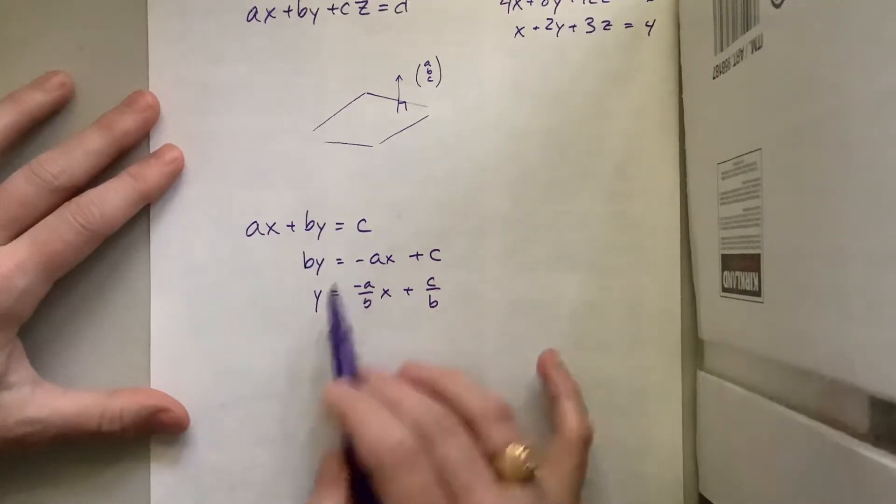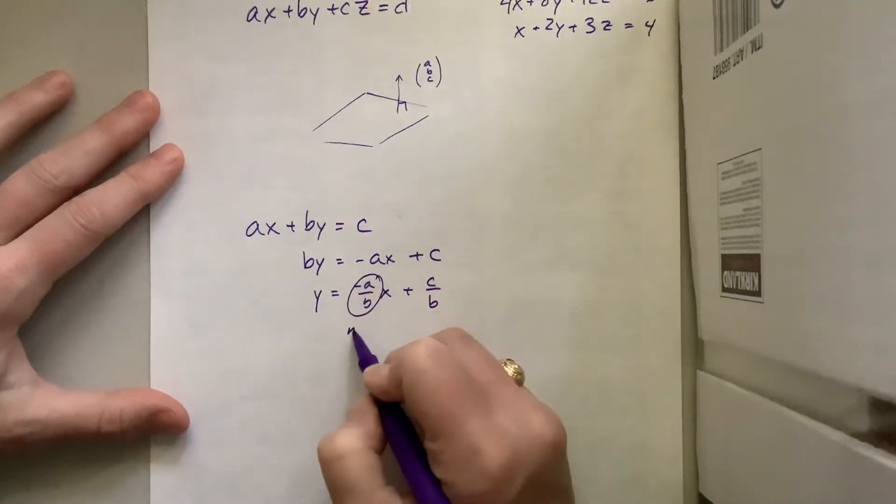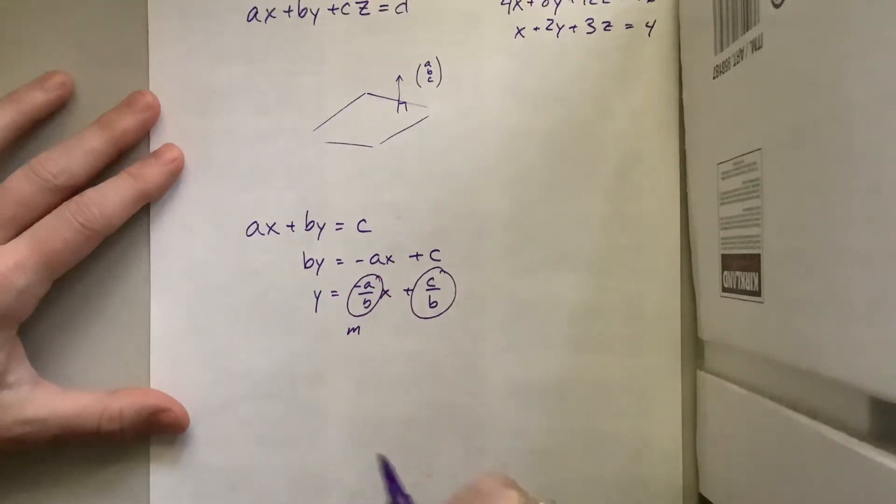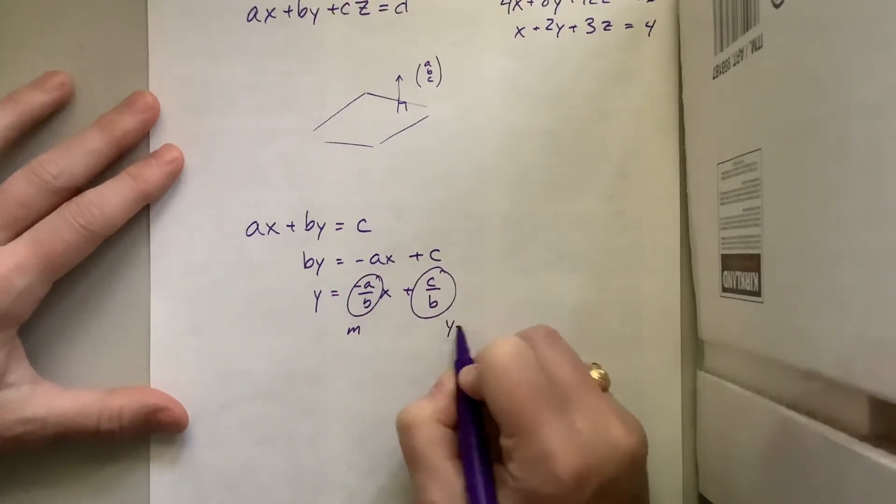What we have here is that A and B sort of tell us something, but what tells us more is this negative A over B. This right here is your slope or your gradient.